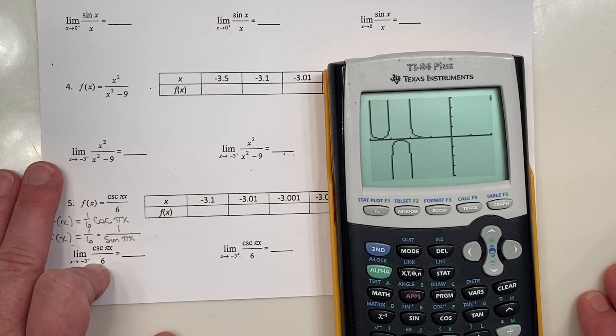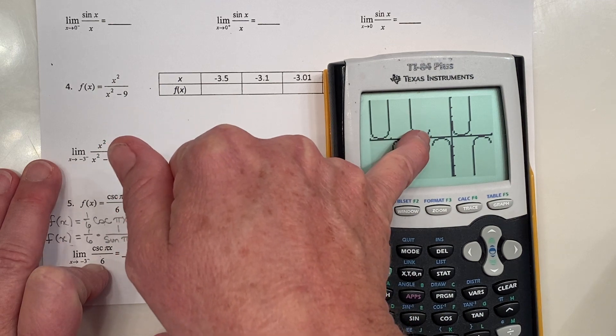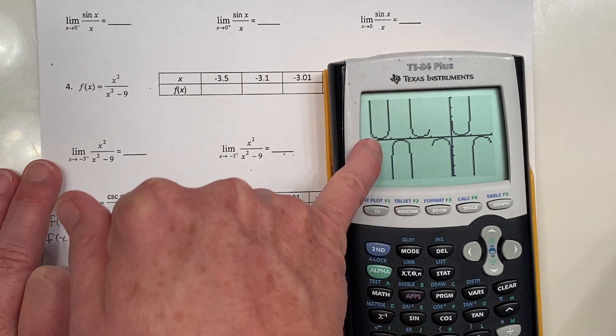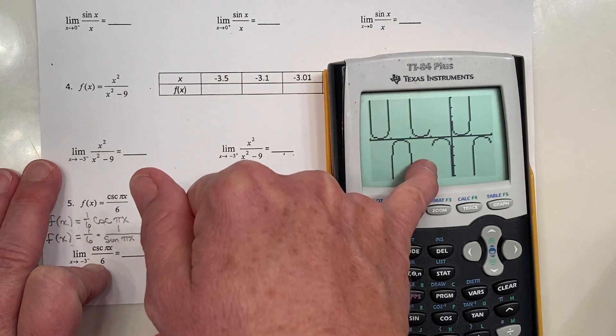Yep, those upward and downward opening parabolas. Sometimes the calculator will kind of stop short. It struggles to draw the rest of the graph here, but we just have to know by the pattern that there's likely another vertical asymptote right here.